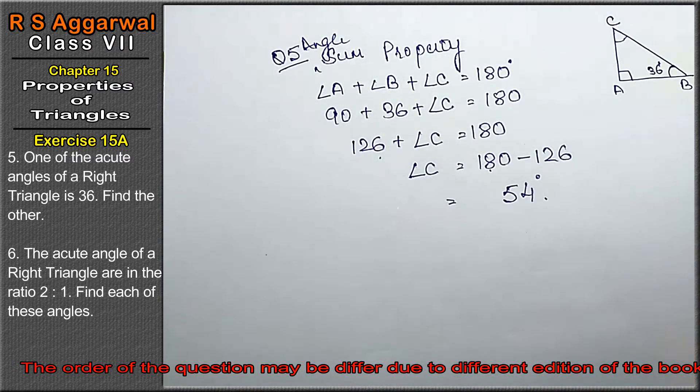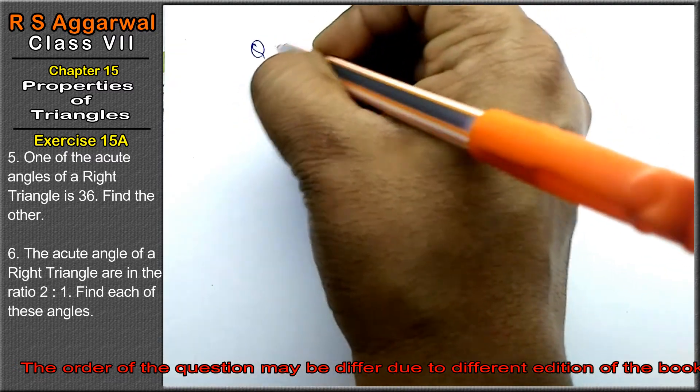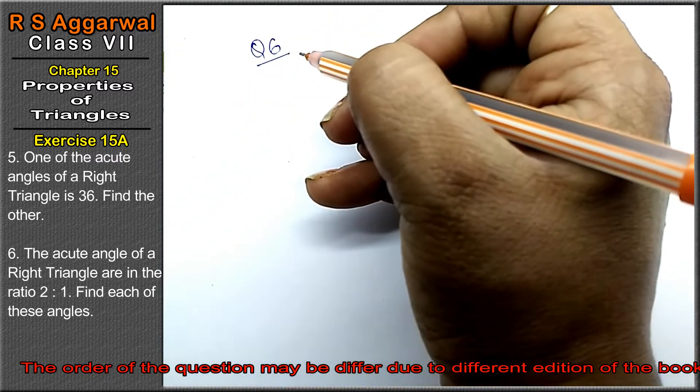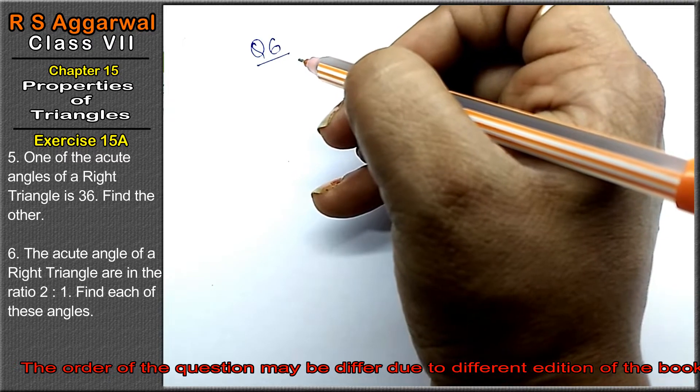54 degrees is the answer. Let's do question number 6 of exercise 15A, properties of triangles.